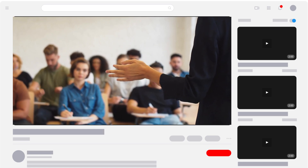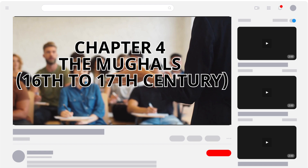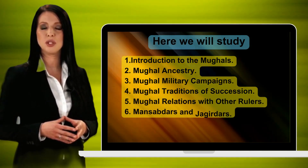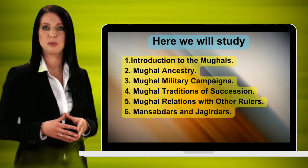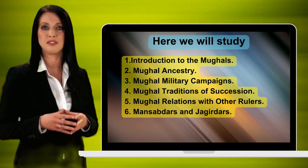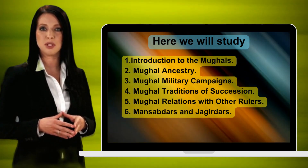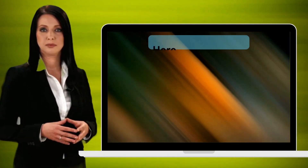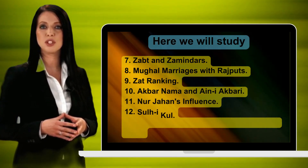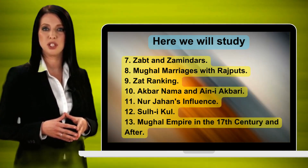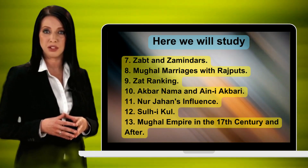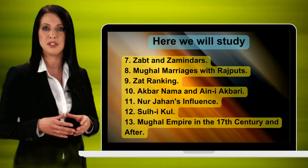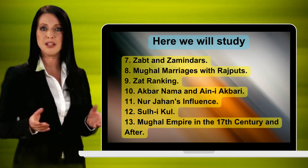In this video we will understand Chapter 4: The Mughals, 16th to 17th century. Here we will study: 1. Introduction to the Mughals, 2. Mughal Ancestry, 3. Mughal Military Campaigns, 4. Mughal Traditions of Succession, 5. Mughal Relations with Other Rulers, 6. Mansabdars and Jagirdars, 7. Zabt and Zamindars, 8. Mughal Marriages with Rajput, 9. Zat Ranking, 10. Akbar Nama and Ain-i-Akbari, 11. Noor Jahan's Influence, 12. Sulh-i-Kul, 13. Mughal Empire in the 17th century and after.